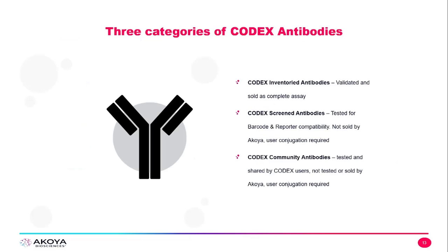There are three categories of CODEX antibodies. The CODEX inventoried antibodies are validated and sold as a complete assay by Akoya. The CODEX screened antibodies are tested for barcode and reporter compatibility but are not sold by Akoya — user conjugation is required, where you get the barcodes from Akoya and source the antibody elsewhere. The CODEX community antibodies are tested and shared by CODEX users but not tested or sold by Akoya, so user conjugation is required.